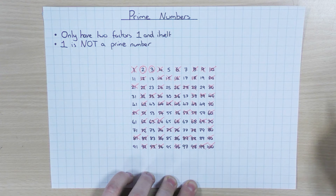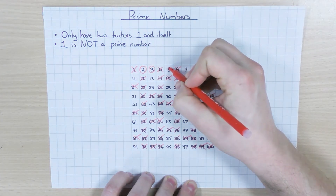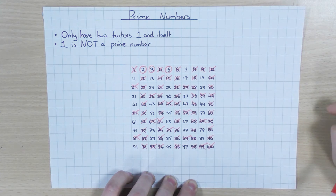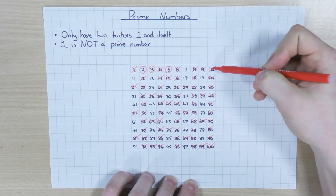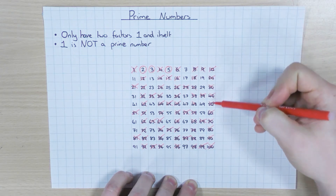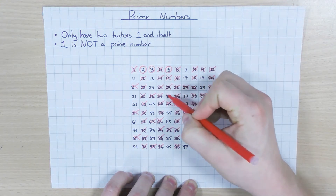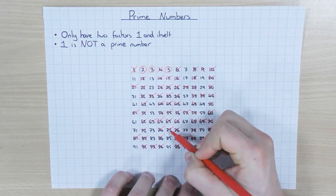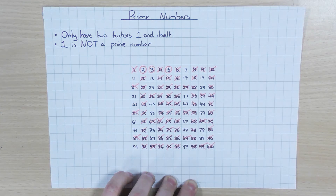So I've got rid of all the numbers that are in the 3 times table. And the next one is 5 — well, 5 is going to be prime because it only has two factors, 1 and 5. So I'm going to get rid of everything in the 5 times table. So obviously 10 and 20 — all these are going to be in the 5 times table, and everything ending in a 5 is going to be in the 5 times table. So I can get rid of those really easily as well.